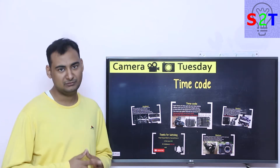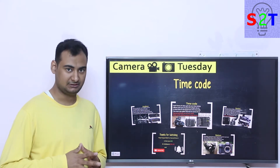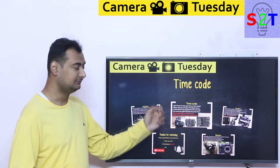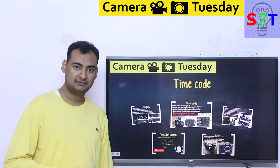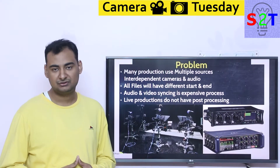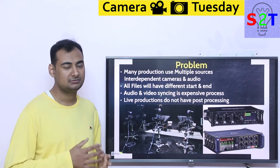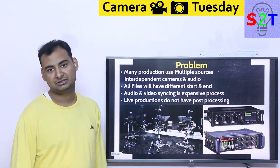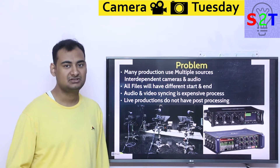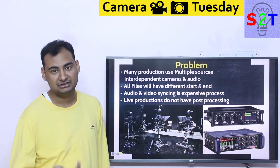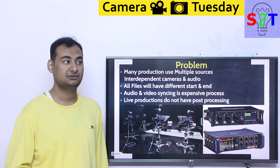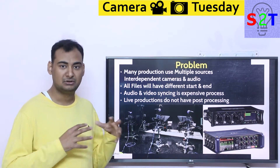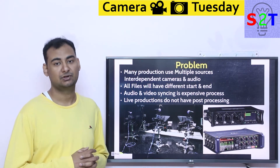Hello YouTube viewers, welcome to my channel Science to Technology. In today's Camera Tuesday show, we're going to talk about time code. First, you have to understand what problem you are trying to solve. The problem is that many productions use multiple sources — think of a cricket match, a football game, or a big action set where you have multiple cameras recording the event.